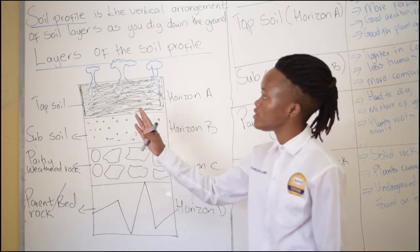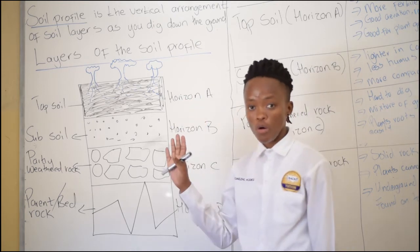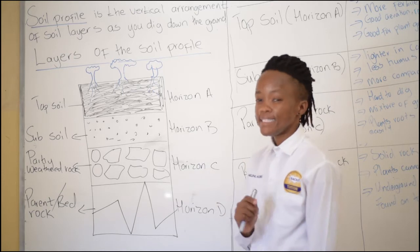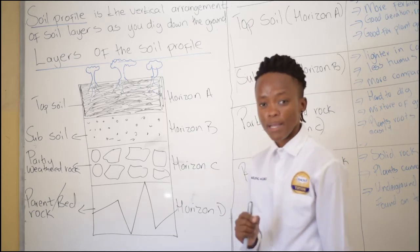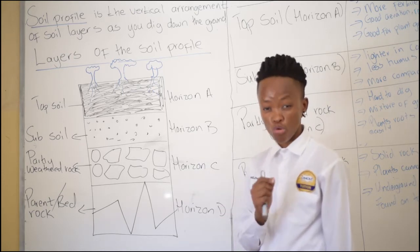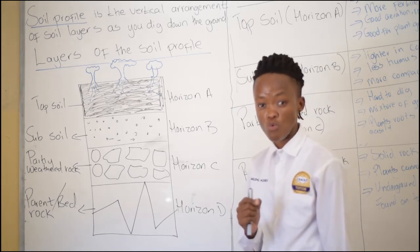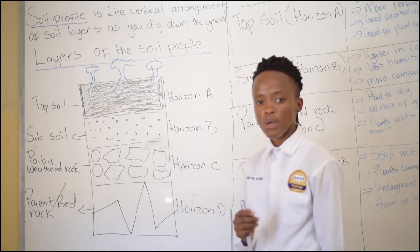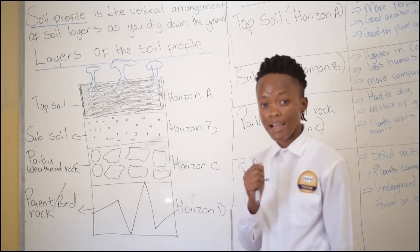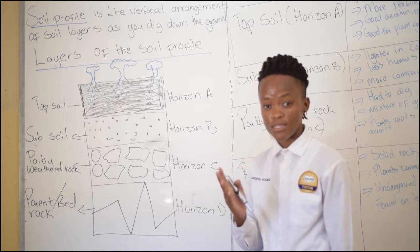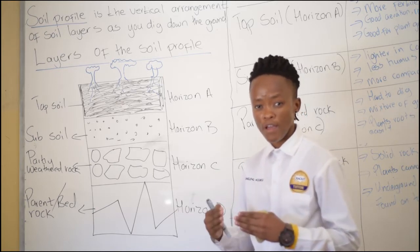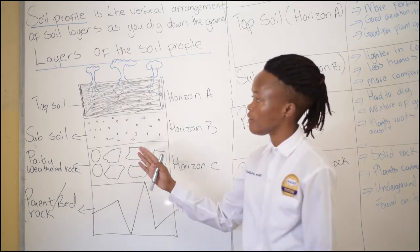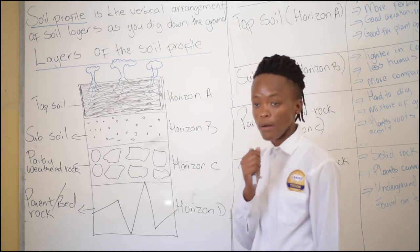Bear in mind that soil profile differs place to place. You can't expect the profile of the soil in Khaburoni to be the same as the profile of the soil in Mamu. It differs country to country, place to place. That's why some plants grow in certain countries and can't grow in another country. It shows you that it depends on the profile of the soil for those trees to grow.